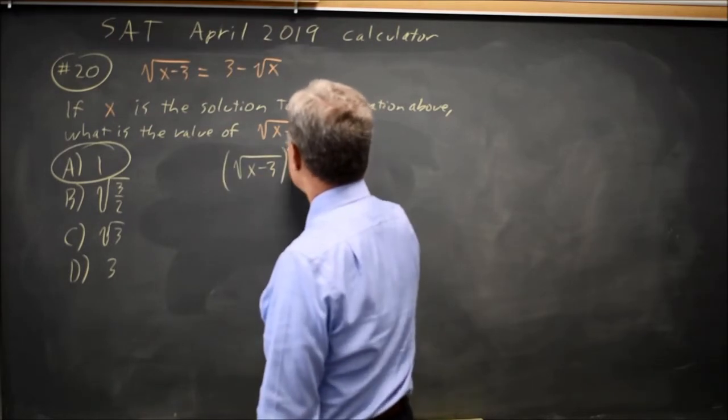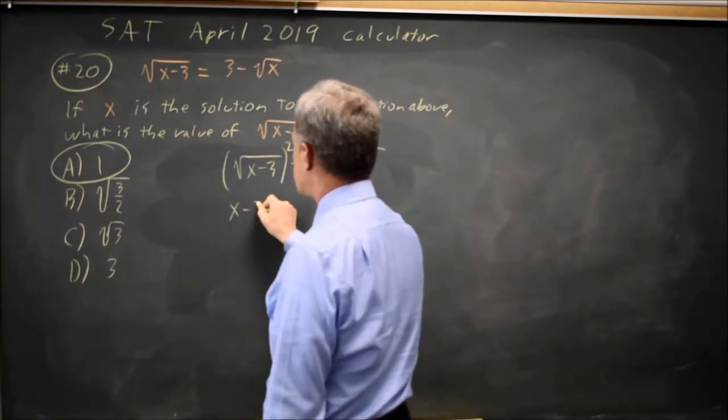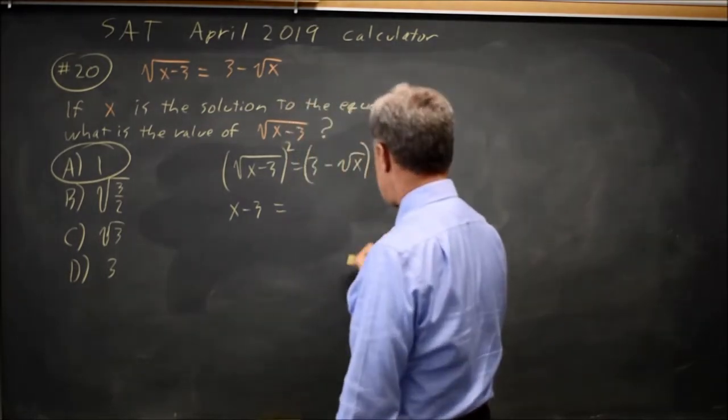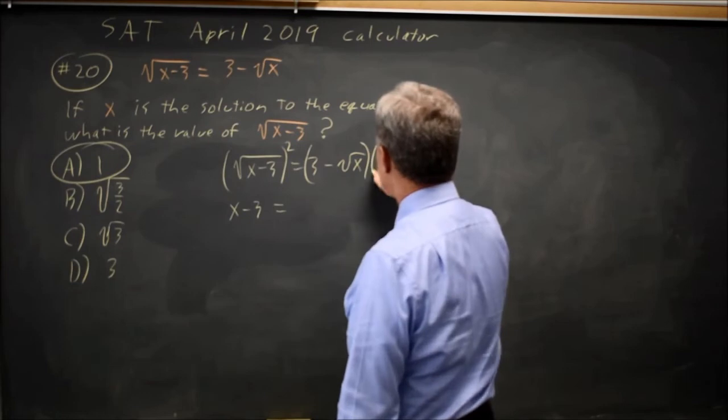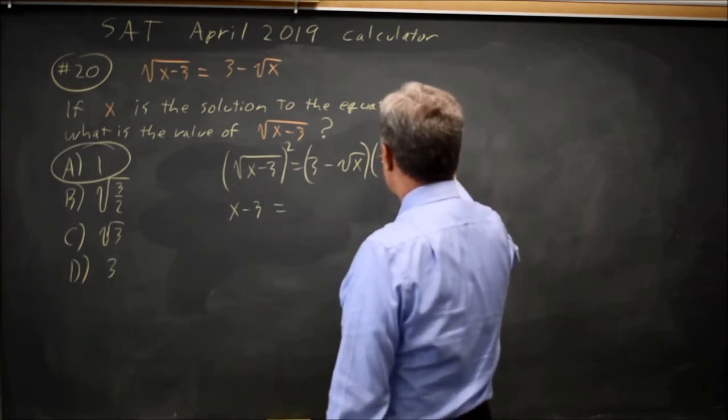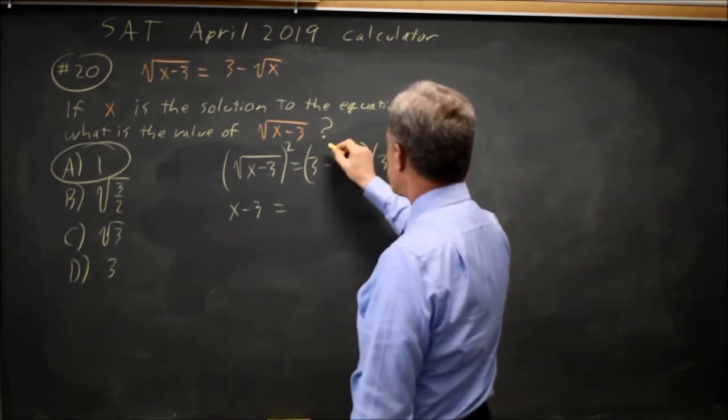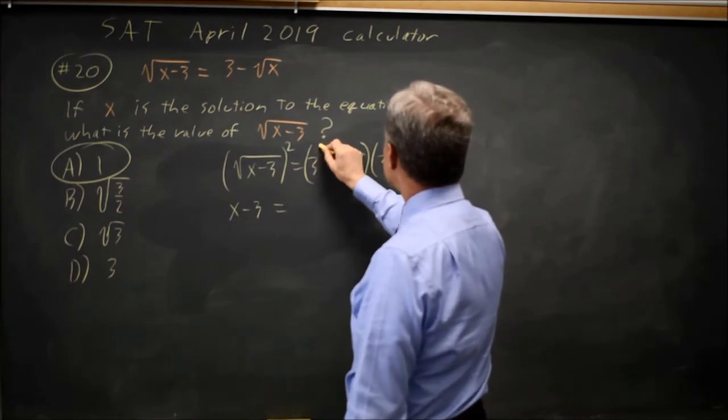And let's square both sides to get rid of one of the square roots. So I have x minus 3 on the left equals... I'm going to write squaring this as multiplying a binomial by itself, because otherwise I sometimes make errors squaring a binomial.